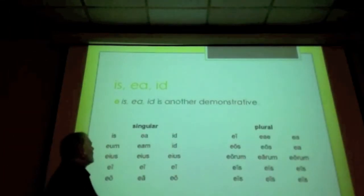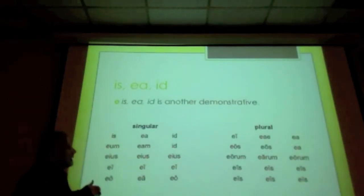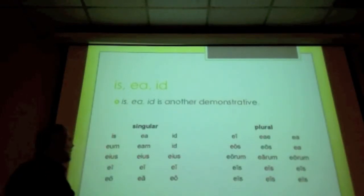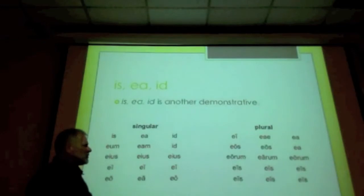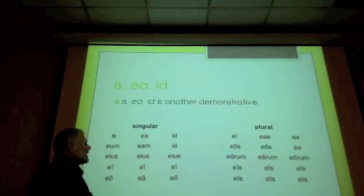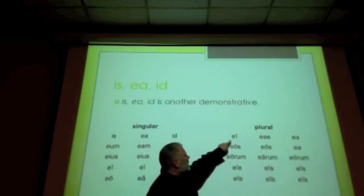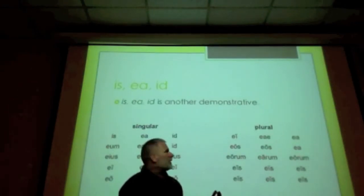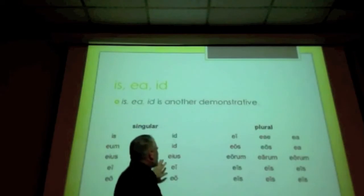Let's move on and talk about another demonstrative — is/ea/id — which is really, really important. Here it is declined. It is introduced in the grammar for 3a. The singular has to be memorized; it's a bit tricky but actually looks similar to declensions you've seen before, like ille or iste. The plural is very nice — it uses the letter E followed by the endings of a standard first and second declension adjective, like multi/multae/multa.